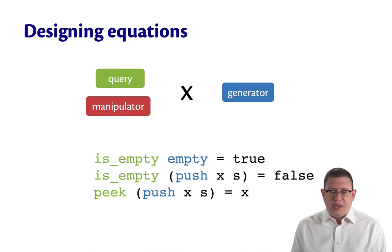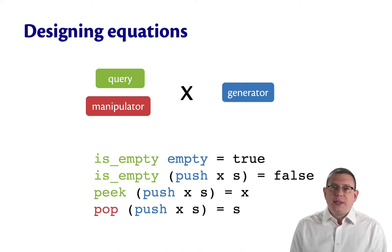Let's pick another green one. How about peek? And another blue one to go with it. How about push? So what should the result of peek applied to push xs be? Well, if we think about that, we know that it should be x. And finally the same thing for pop.